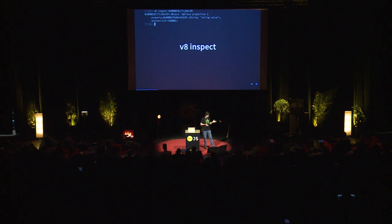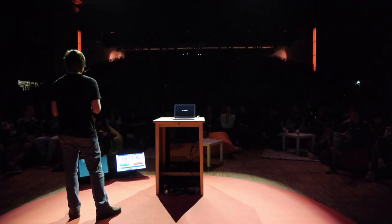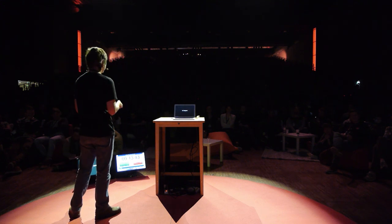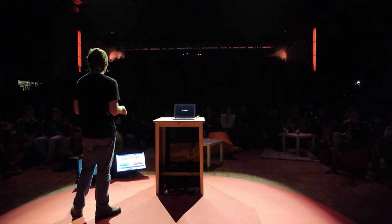You can inspect with V8 inspect — just type V8 inspect followed by the address of an object, and it will print its properties or anything else. It can also inspect functions themselves to see closure variables. This tool is really useful if you run JavaScript code in production on servers, because you can just collect core dumps and inspect them to see what went wrong, without just guessing from the stack trace.